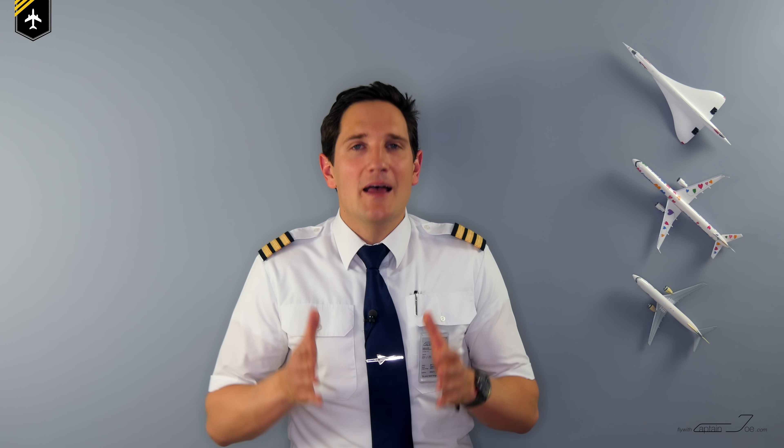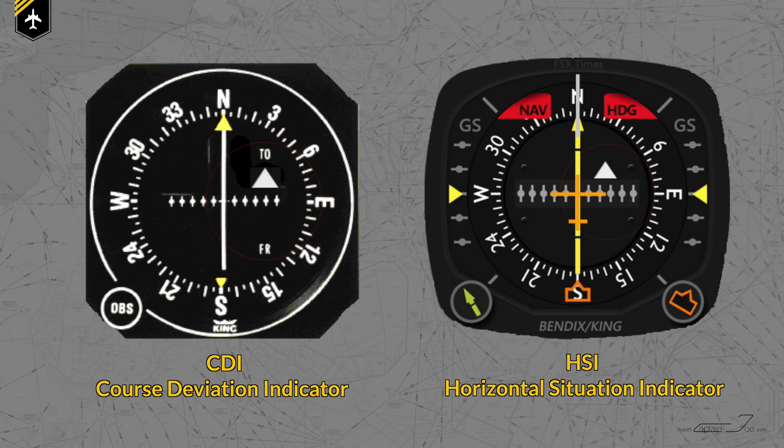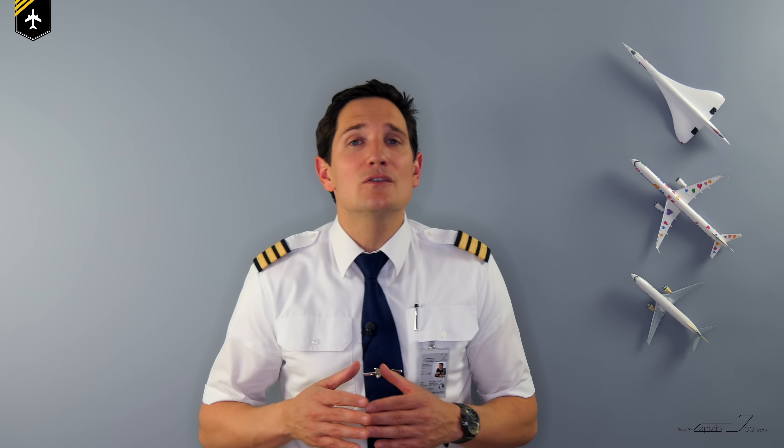A big question: when do you start timing on the outbound leg? When you are abeam the holding fix. How do you know when you're abeam the station or holding fix? When your OBS or HSI flicks from the 'to' indication to the 'from' indication. A similar technique applies on NDB holdings: as soon as the ADF needle points at a 90 degree angle to your outbound course, you can start timing. And once you've completed your turn flying towards the fix, you start timing when your wings become level.